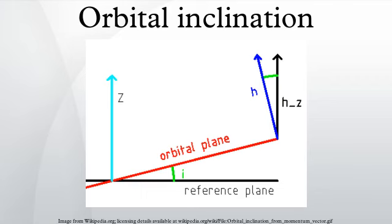Orbital inclination is the angle between a reference plane and the orbital plane or axis of direction of an object in orbit around another object.